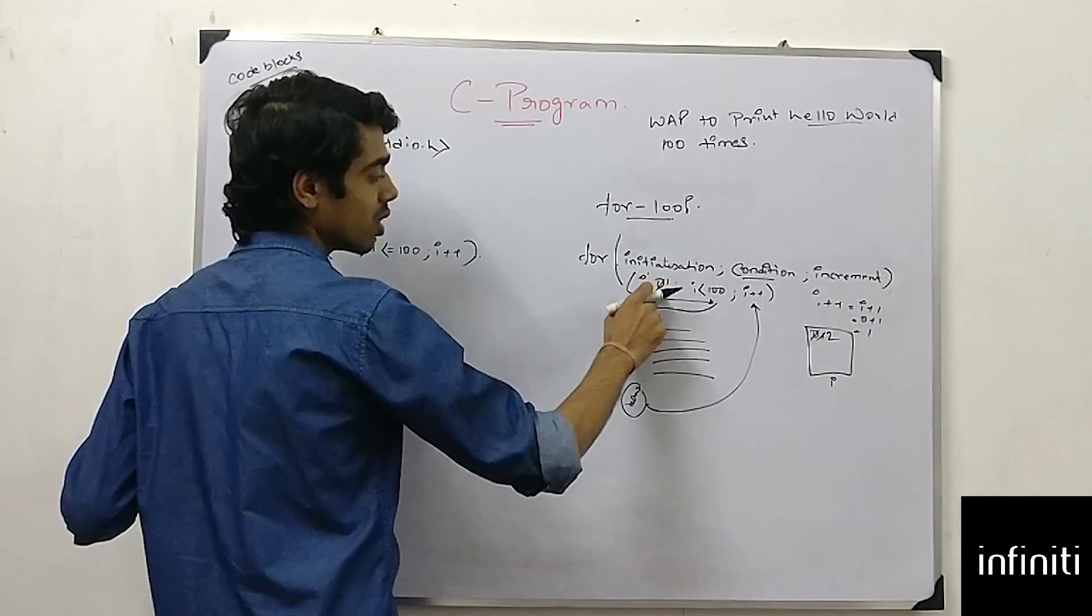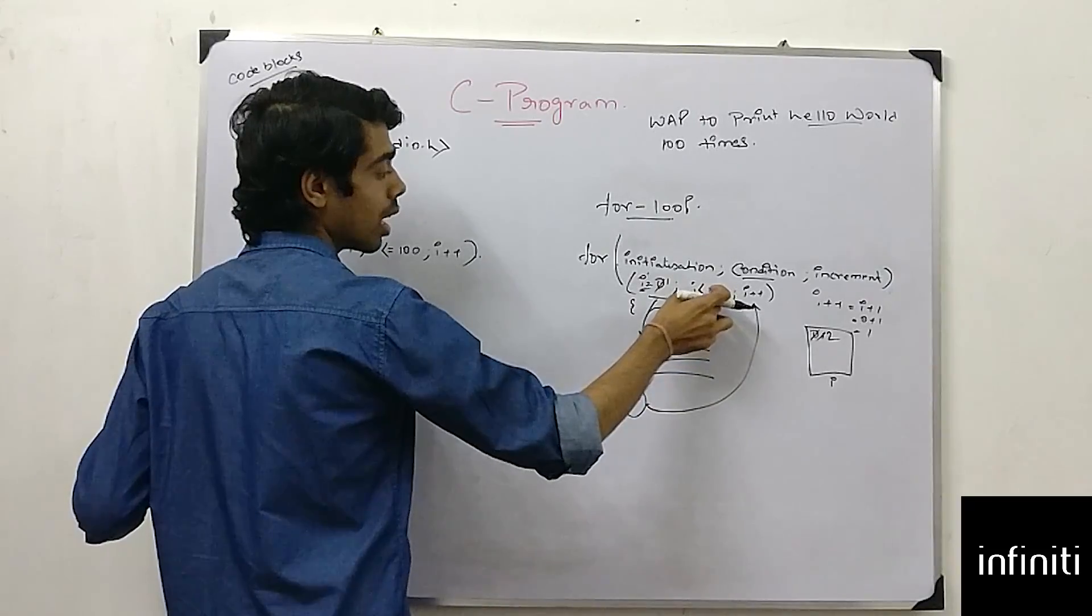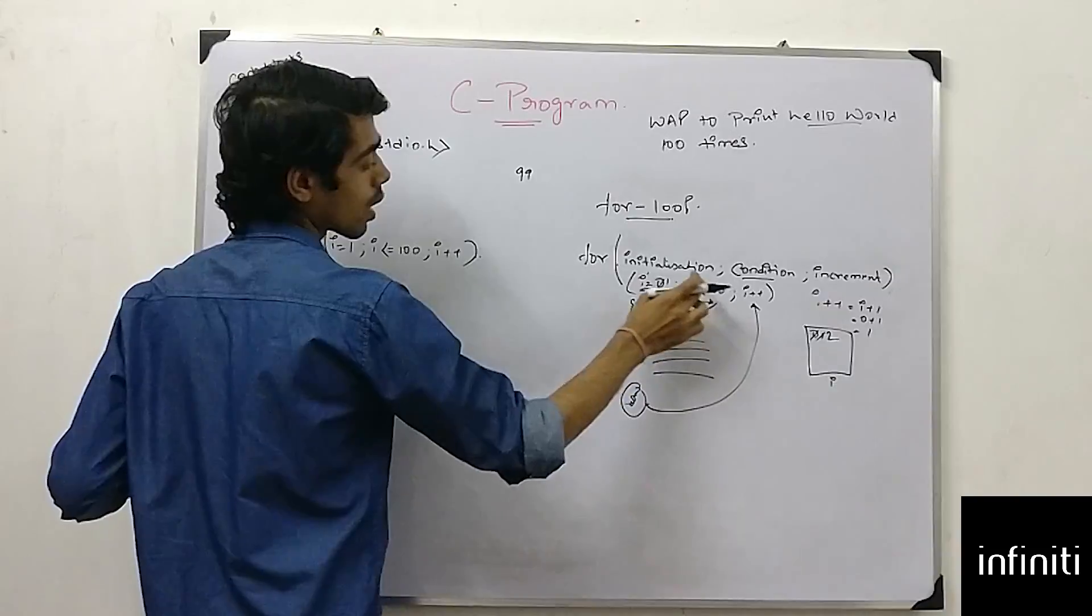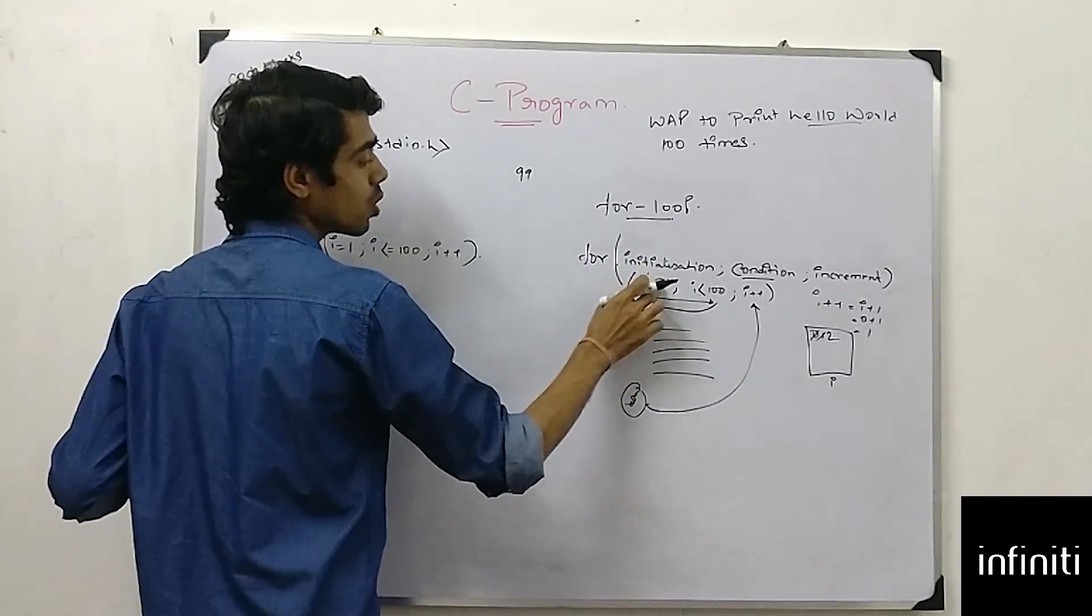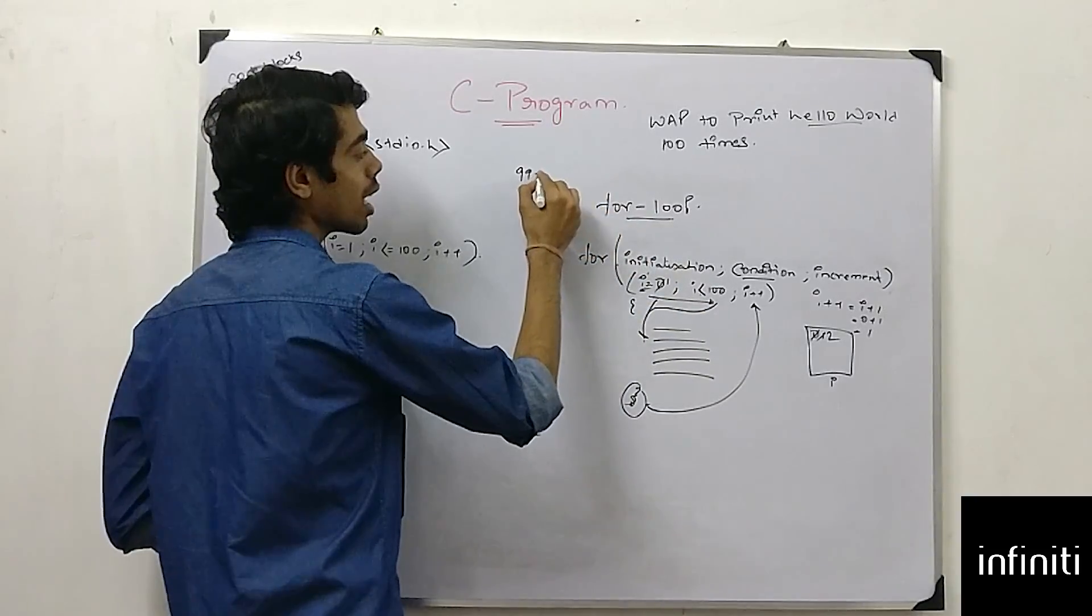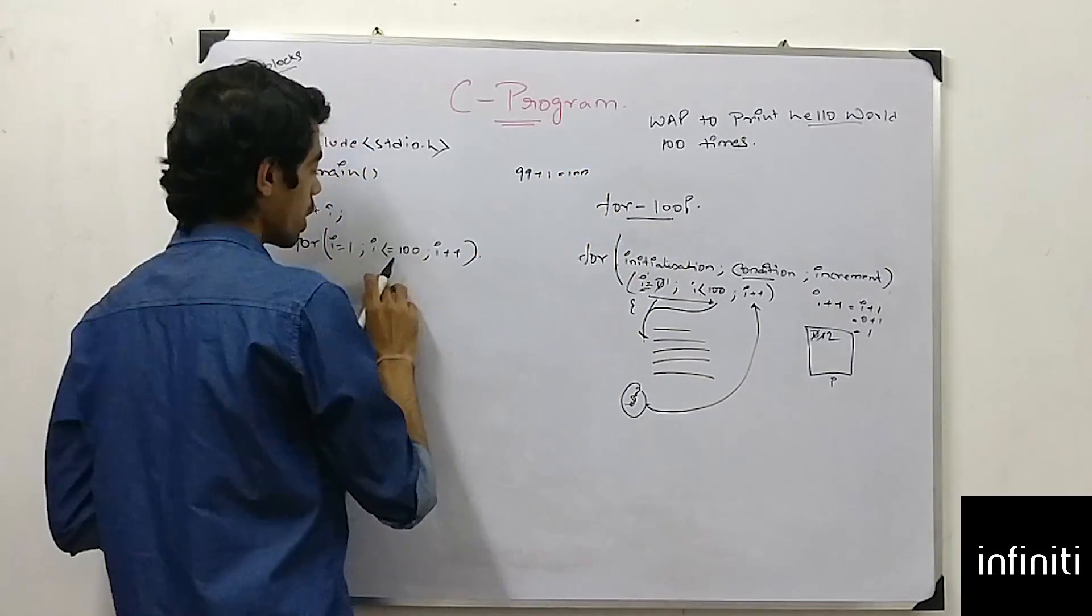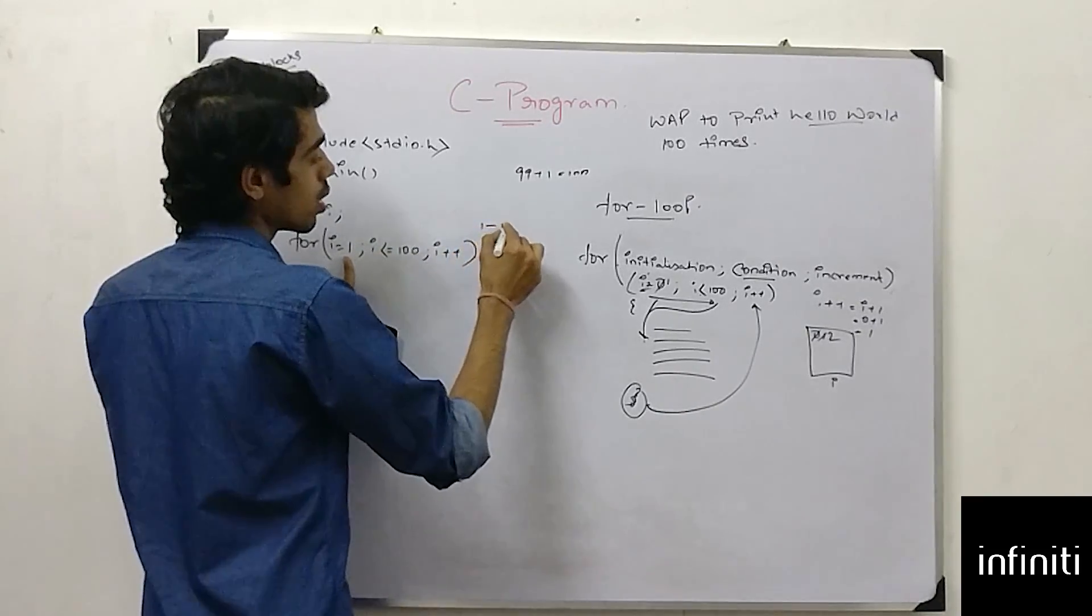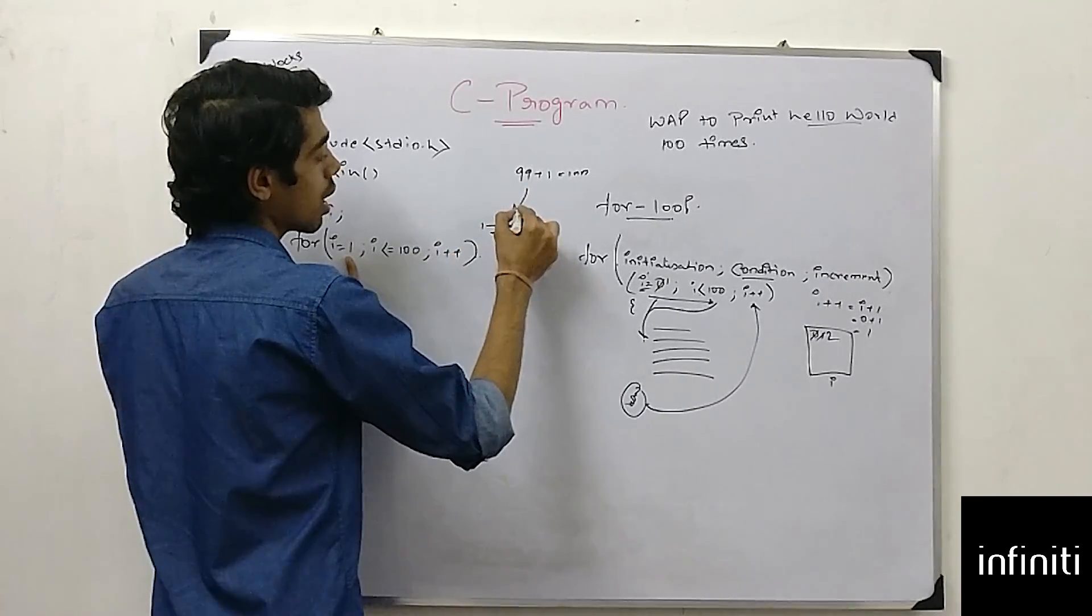Means you can take zero, but your loop should be less than hundred. Means less than hundred is 99 and zero. For zero it will run and it will run till 99. 99 plus 1 is 100. And over here, from 1 to 100. Both are same.